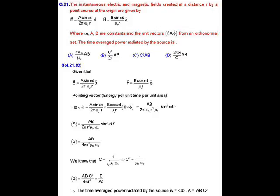Now, the time average power radiated by the source which we were asked to calculate in this question can be defined as P equals to pointing vector into area. The area of this sphere will be considered as 4 pi r square. So, if we apply the operation P equals to S into A, in this question we will get P equals to ABC square that is option C is the correct answer.